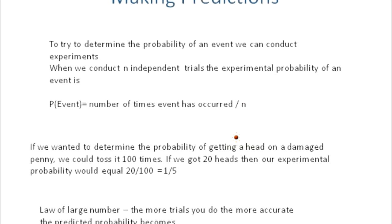If we want to determine the probability of getting a head on a damaged penny, we could toss it 100 times. If we got 20 heads, the probability of getting a head would be 20 over 100, which simplifies to one over five. The law of large numbers says the more trials you do, the more accurate the prediction becomes — a thousand tosses gives a more accurate assessment than just five.